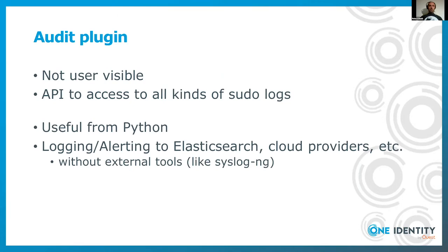The audit plugin is brand new in sudo 1.9. It's not a user-visible feature, meaning you cannot configure it from the sudoers file, but it's an API to access any kind of sudo logs. You can use it to debug sudo and also to send logs to other places than syslog directly from sudo — like logging or alerting to Elasticsearch or different cloud providers.